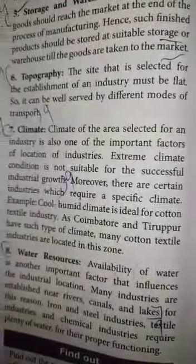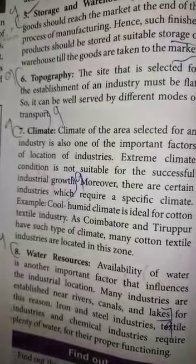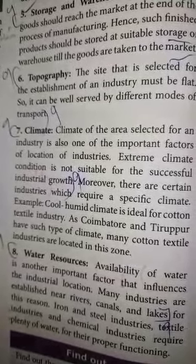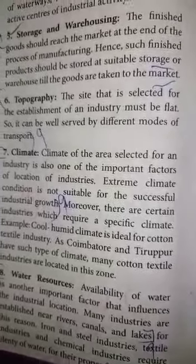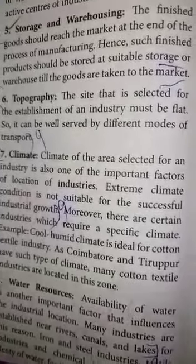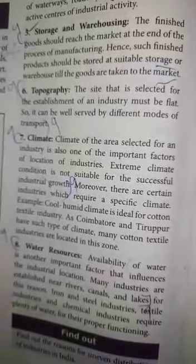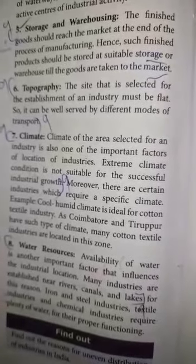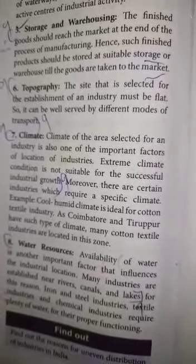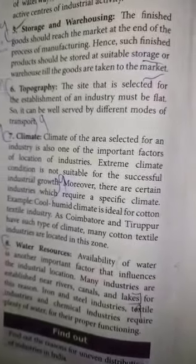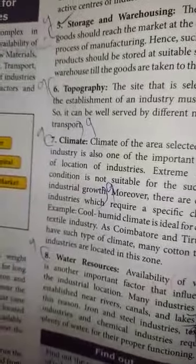Water Resources: availability of water is another important factor that influences the industry's location. Many industries are established near rivers, canals and lakes. Iron and steel industries, textile industries and chemical industries require plenty of water for their proper functioning.